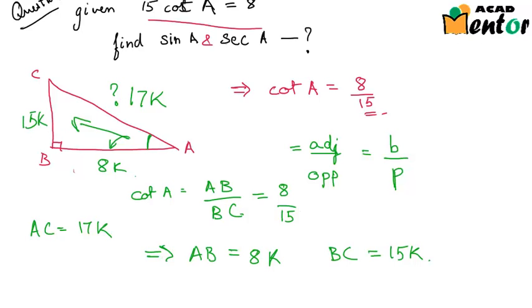Now we can find out all the ratios. So sin A would be perpendicular by hypotenuse, which is the opposite side 15K by hypotenuse 17K. So we would have sin A as 15K by 17K, or just 15 by 17.